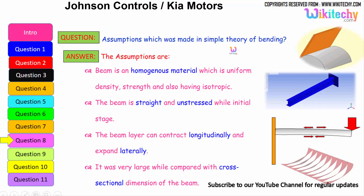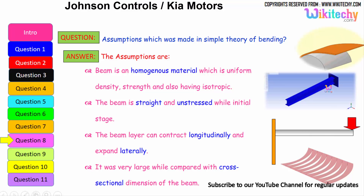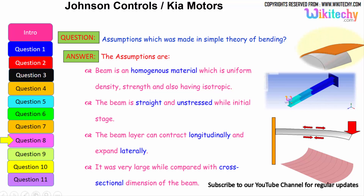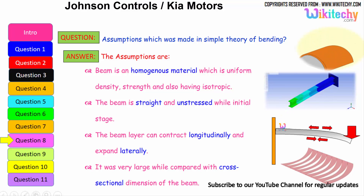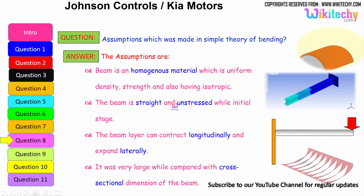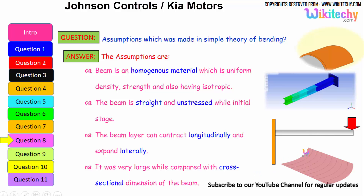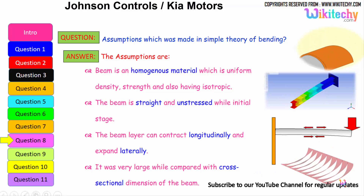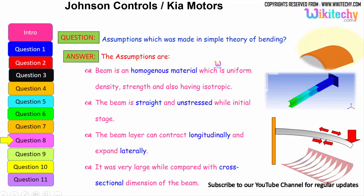What are the assumptions made in the simple theory of bending? The assumptions are: the beam is made of a homogeneous material with uniform density and is isotropic; the beam is straight and unstressed in its initial state; the beam can contract longitudinally and expand laterally; and the span of the beam is very large compared with the cross-sectional dimensions. These are the assumptions we must make for the simple theory of bending.